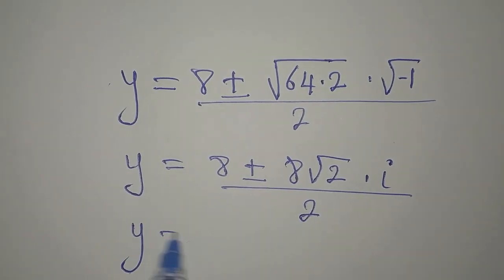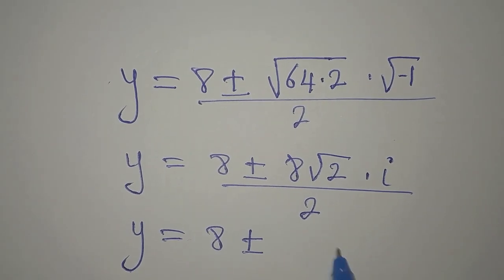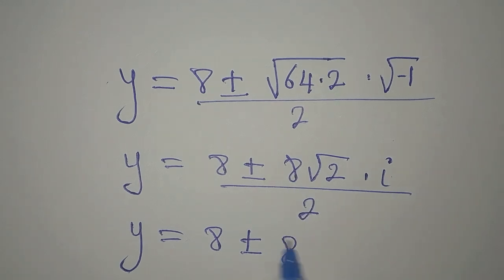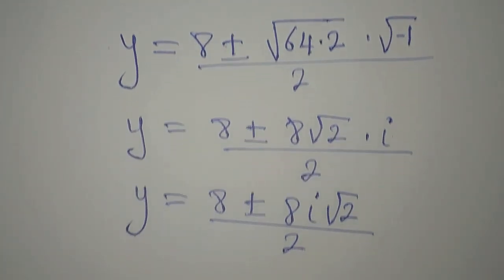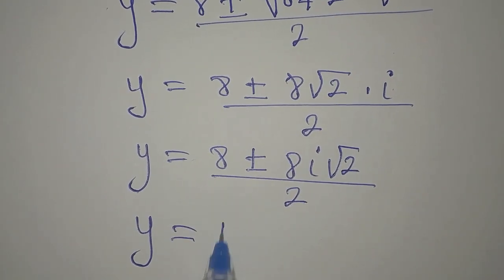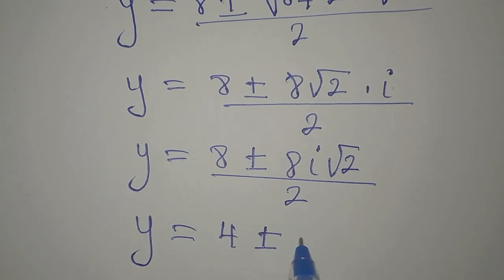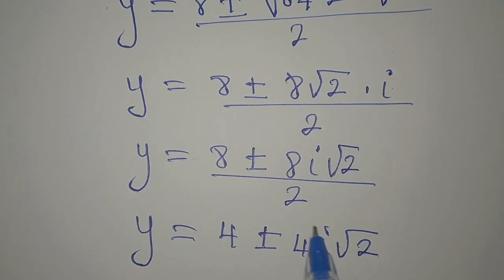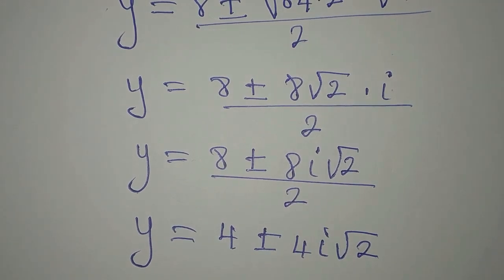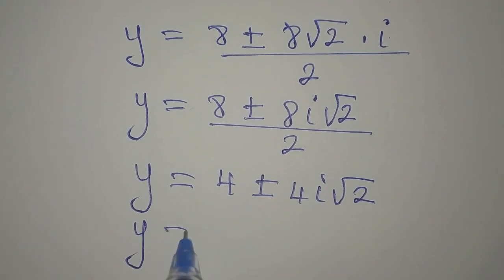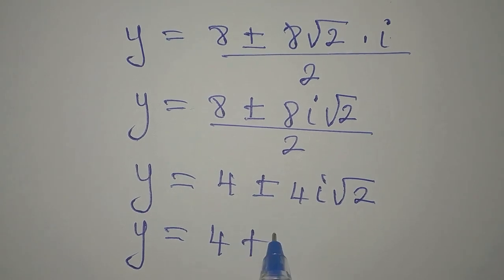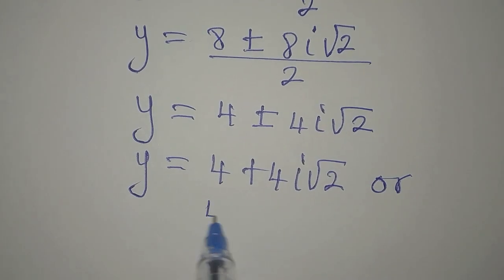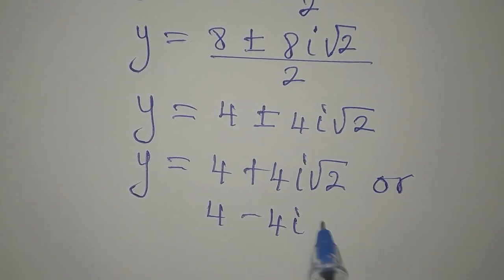So y equals 8 plus or minus 8i root 2, divided by 2. Dividing everything by 2, y will now be 4 plus or minus 4i root 2. This means our y is: 4 plus 4i root 2, or 4 minus 4i root 2.